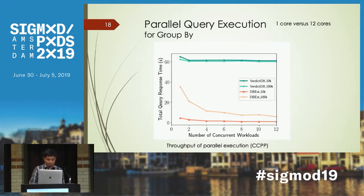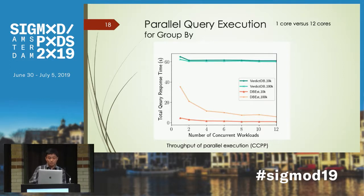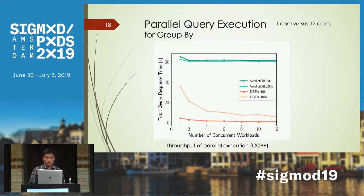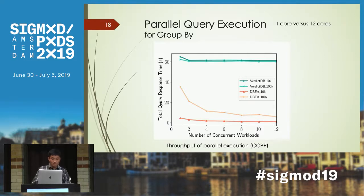All previous results show the performance of DBS using one core only. Here we show the parallel version of DBS, stress testing throughput performance. We fix the total number of queries but change the number of concurrent workloads. As the number of concurrent workloads increases, the total query response time drops significantly. However, for VerdictDB, since all cores are used during query execution, there is no benefit from parallelism.